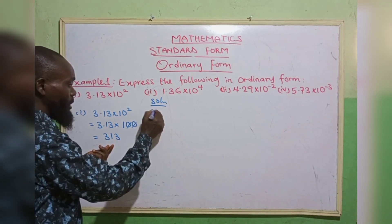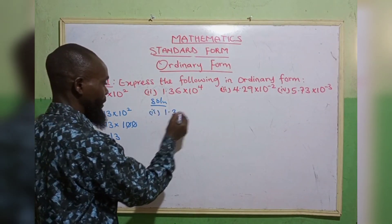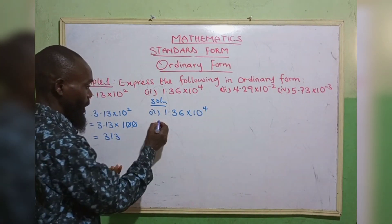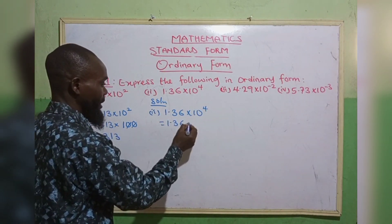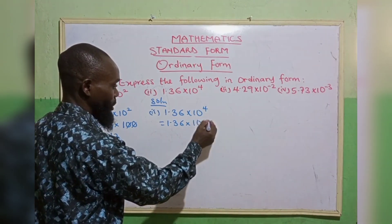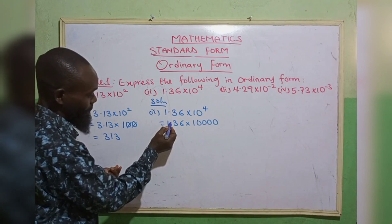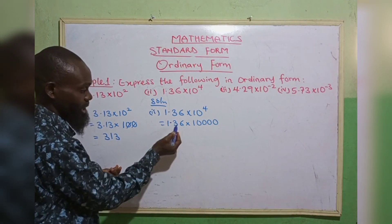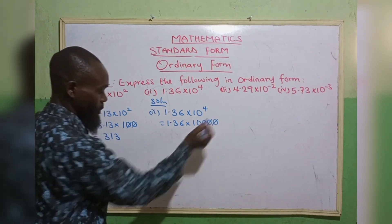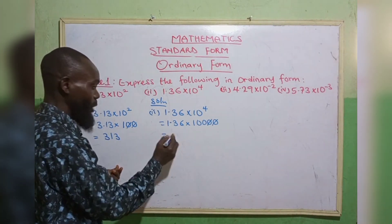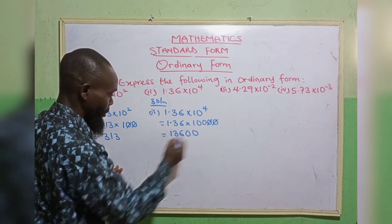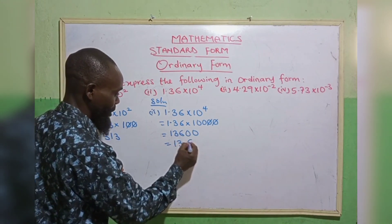The second one: 1.36 times 10 raised to the power of 4. 10 to the power 4 means 4 zeros: 1, 2, 3, 4. At the back of the decimal point we have 2 digits — 1, 2. So we take away 2 zeros. When we remove the decimal point we have 1, 3, 6, and 2 remaining zeros. That gives 13,600. So this is the ordinary form of this standard form.